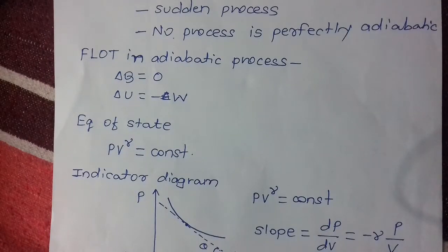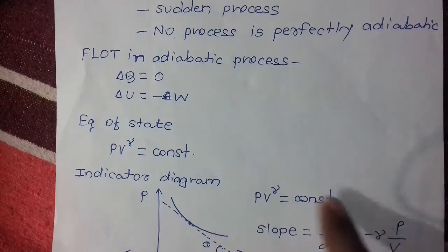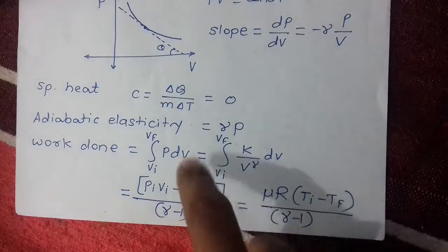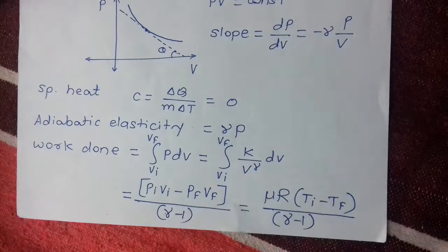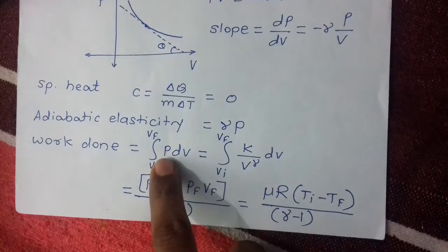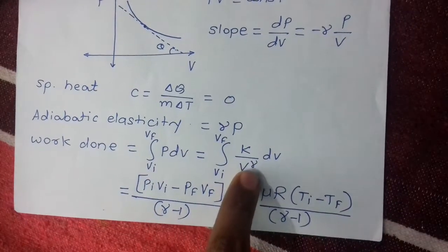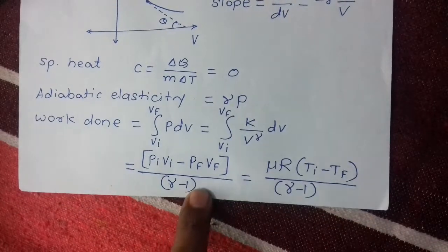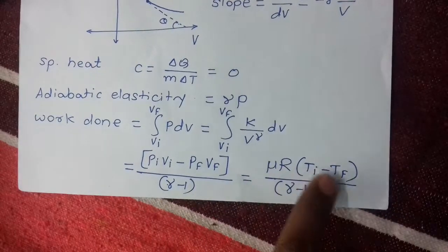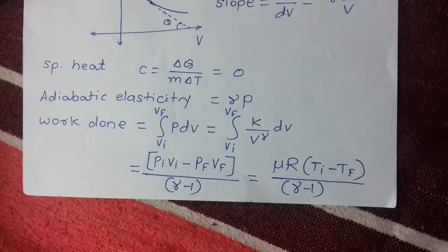The adiabatic indicator diagram looks similar to the isothermal curve but is steeper. Taking the derivative gives dP/dV = −γP/V. Adiabatic elasticity = γP. Specific heat for adiabatic process is 0. Work done = (PiVi − PfVf)/(γ−1) = μR(Ti − Tf)/(γ−1).